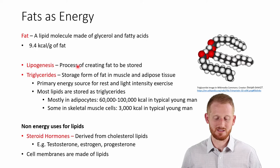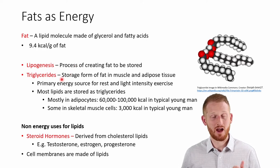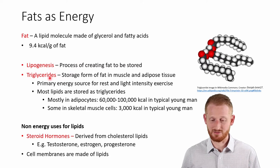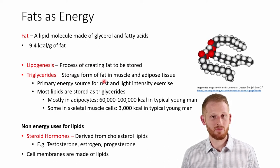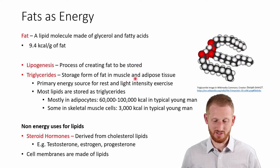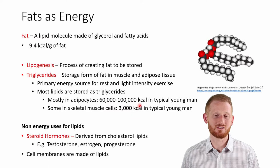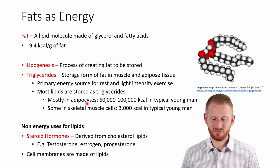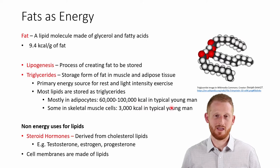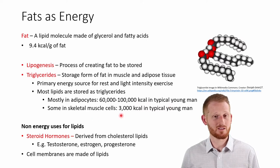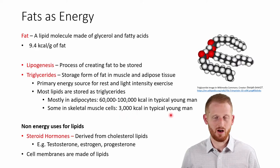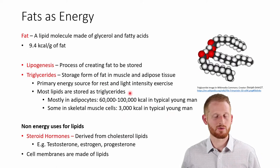Over-consumption of any of those does lead to fat production. Our body's primary way of storing fat is through triglycerides, so most of the fat in our body is triglycerides. Our primary storage places are muscle and adipose tissue. We get somewhere around 60,000 to 100,000 kilocalories worth of fat in our adipose tissue in a typical young healthy man, and around 3,000 kilocalories of fat stored within our muscles.